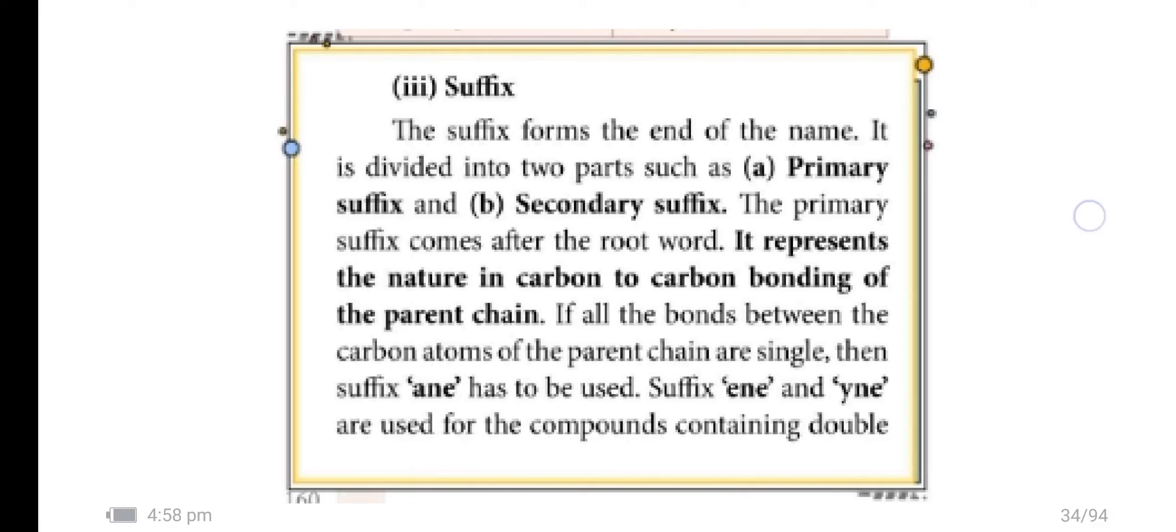Suffix is divided into two parts such as the primary suffix and secondary suffix. The primary suffix comes after the root word. It represents the nature of the carbon to carbon bonding of the parent chain. If all the bonds between the carbon atoms of the parent chain are single, the suffix 'ane' is used. 'Ene' and 'yne' are used for the compounds containing double and triple bond respectively. The secondary suffix describes the functional group of the compound.